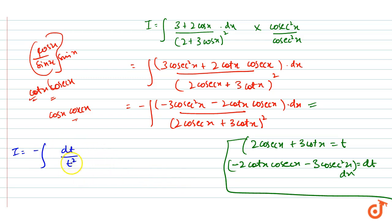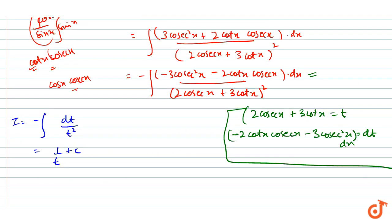Now we have -∫dt/t² which equals 1/t + c. And t की value was 2cosecx + 3cotx, so our final answer is 1/(2cosecx + 3cotx) + c. This is our final answer.